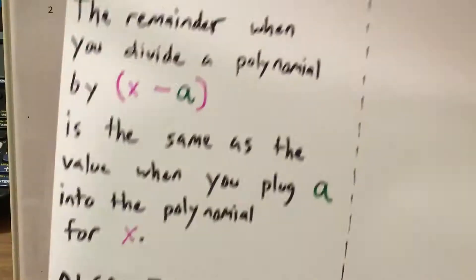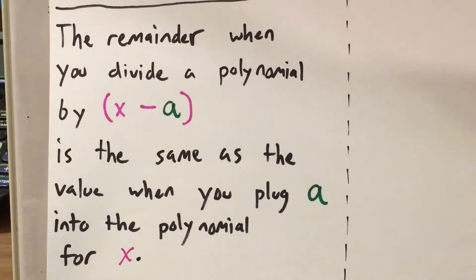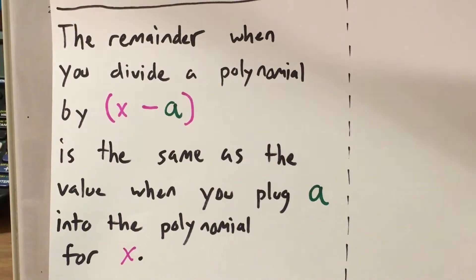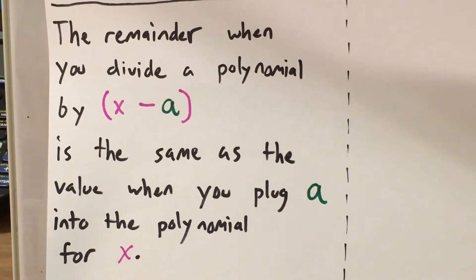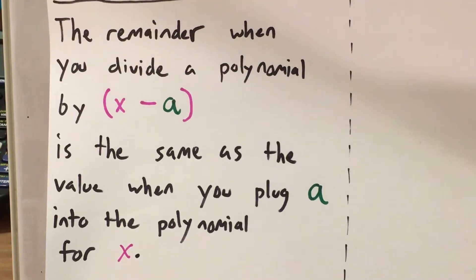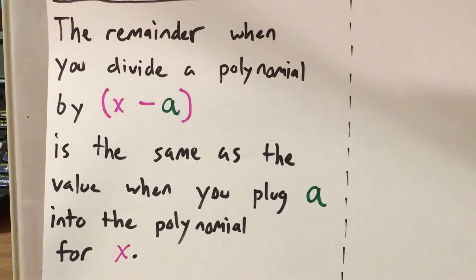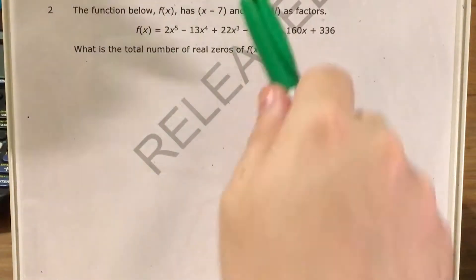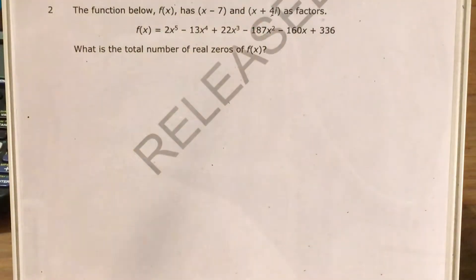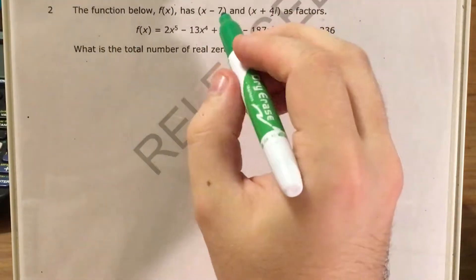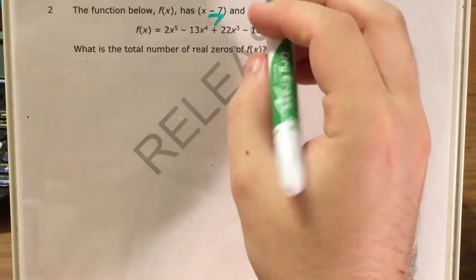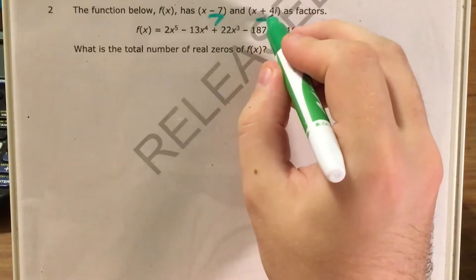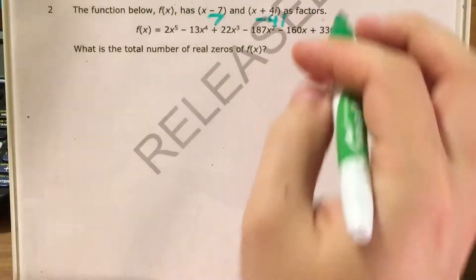The remainder theorem says that if we're dividing a polynomial by x minus something, the remainder when we divide is the same as the value when we plug just that number into the polynomial for x. So looking at x minus 7, that's just the number 7. And x plus 4i tells us that's negative 4i.